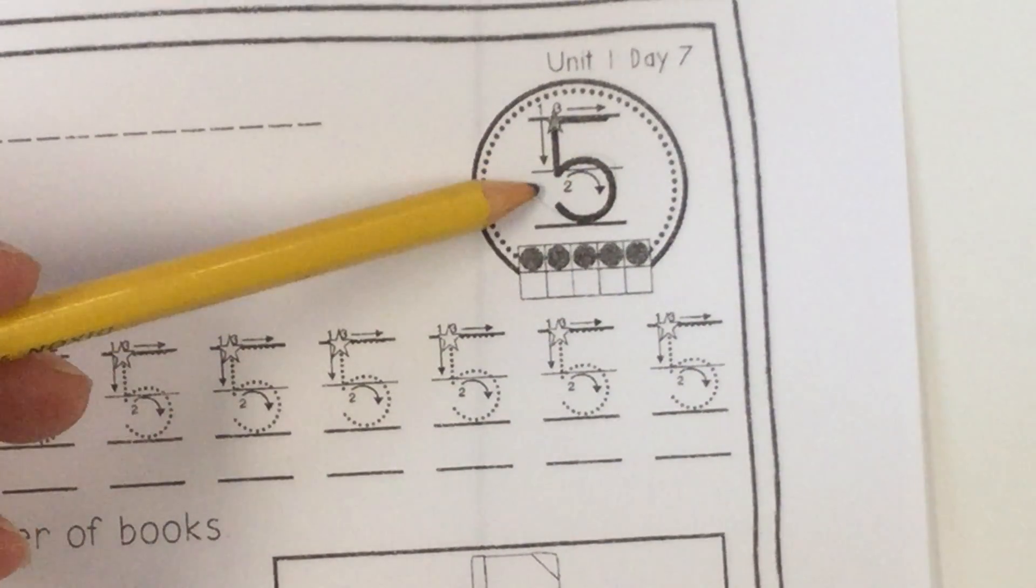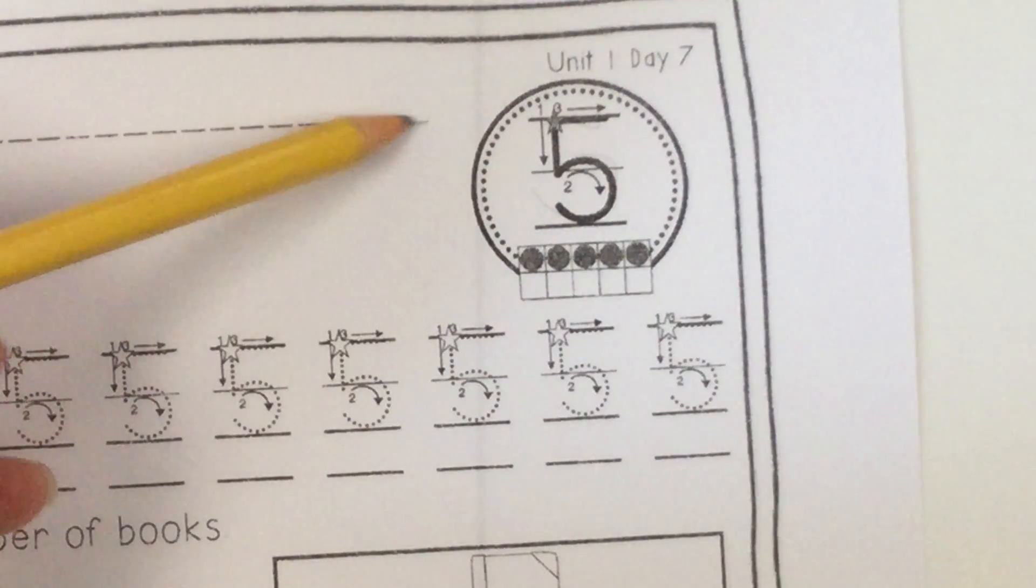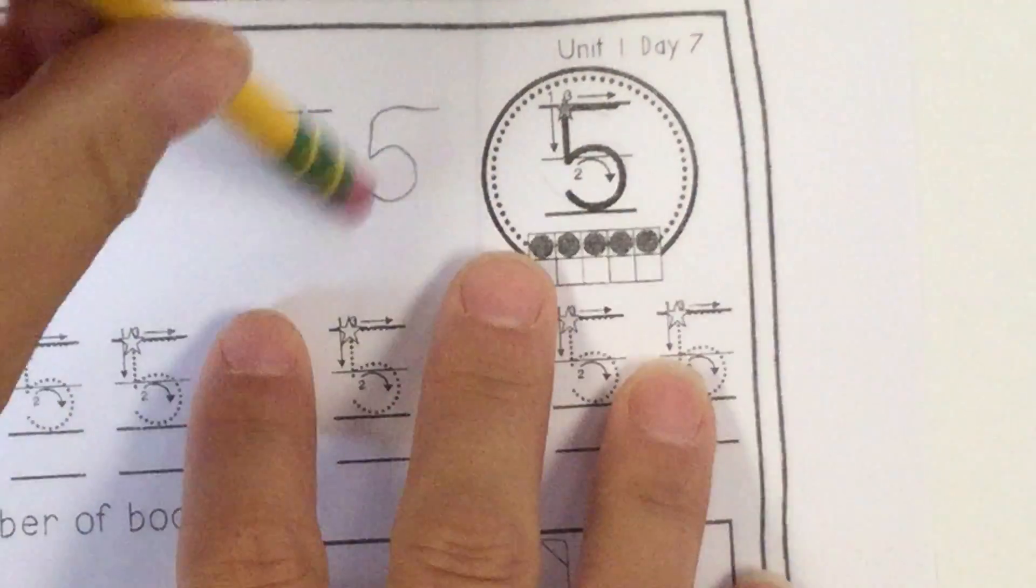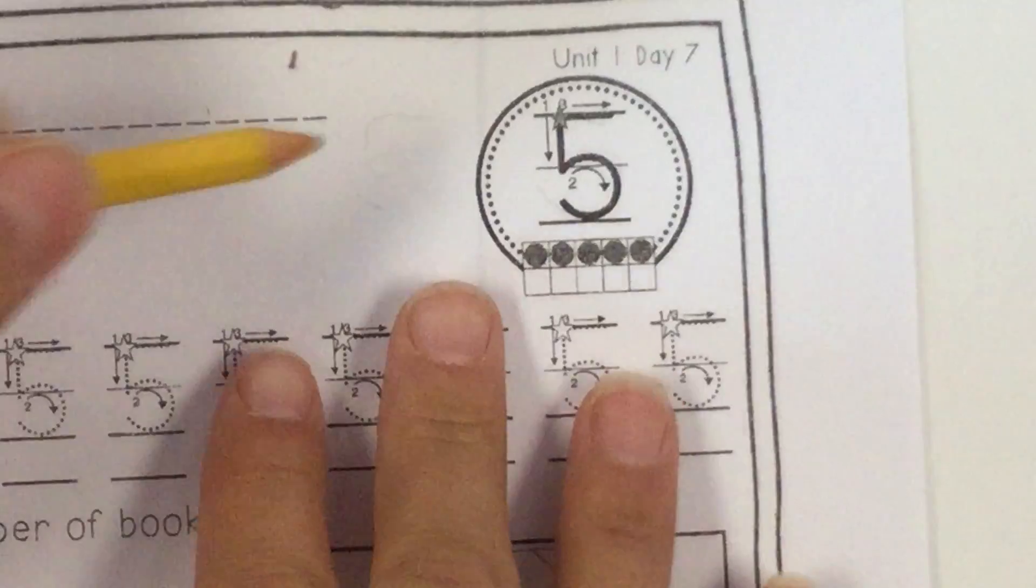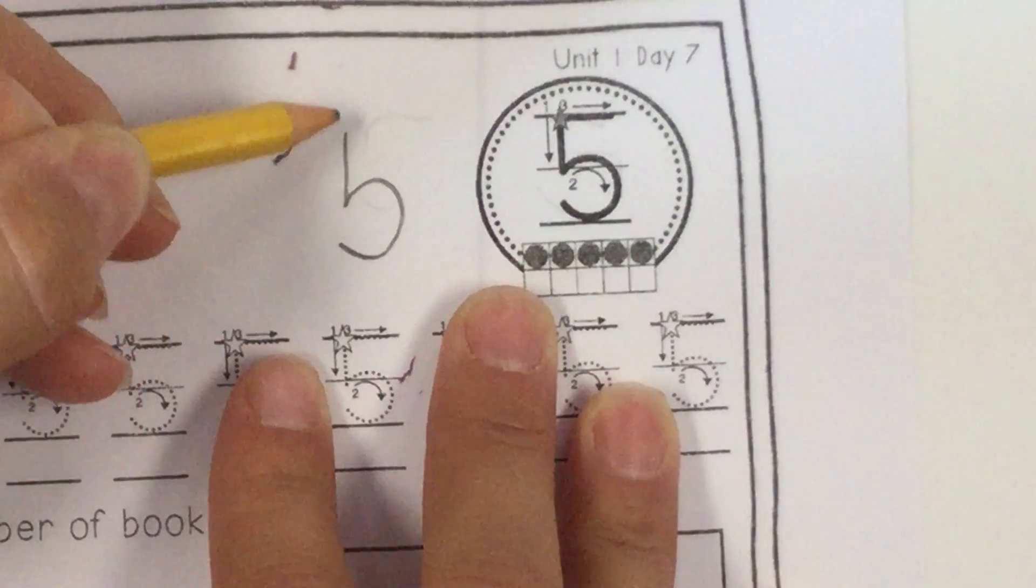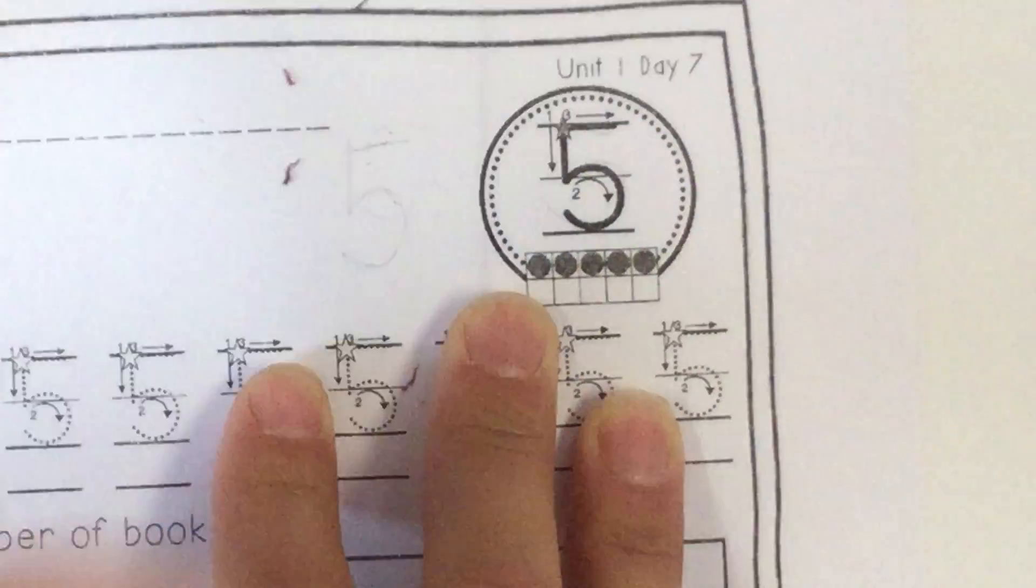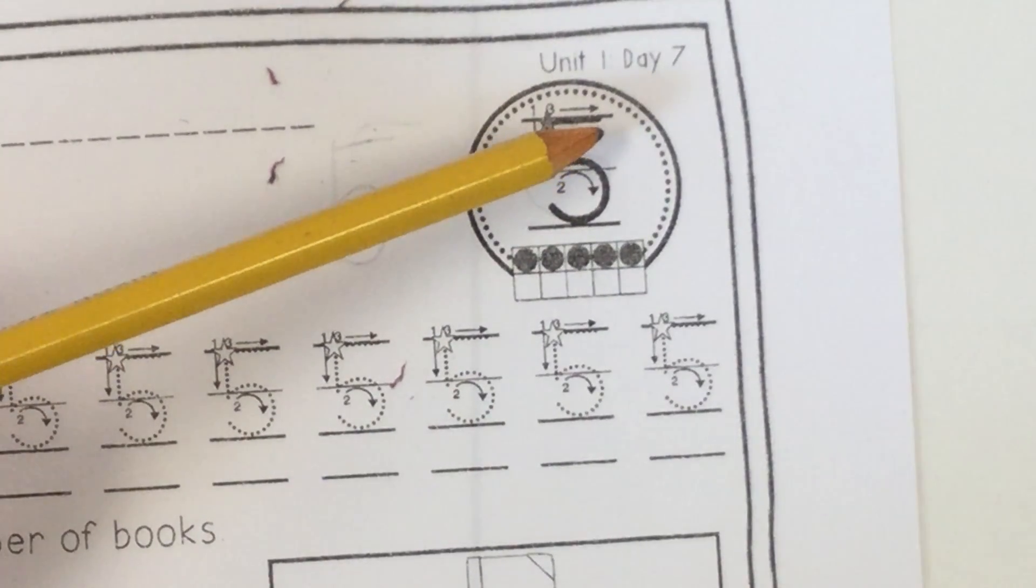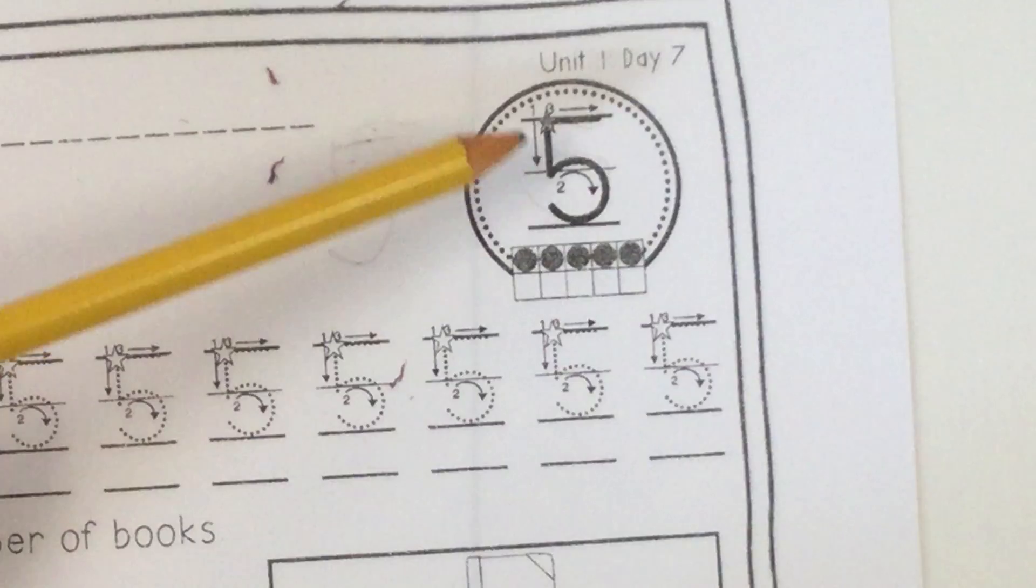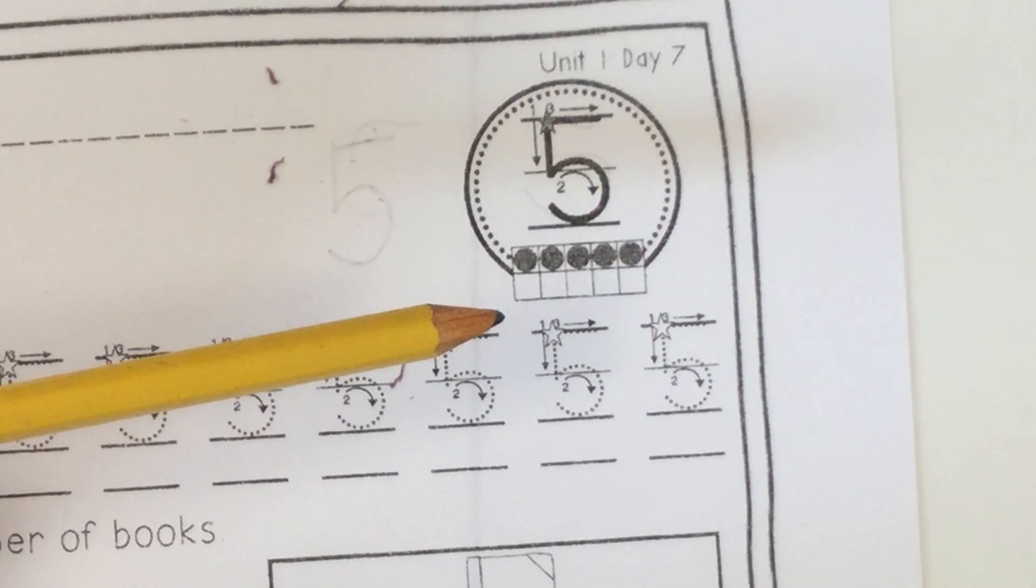Down and around and give it a hat. Okay. So make sure you do it like that and not like this. All right. Don't make your five like that because it's not one stroke. It's two. You come down, around, and then give it a hat. Okay. Much better. All right. So let's sing the song. Down and around and give it a hat. Down and around and give it a hat. Down and around and give it a hat. That's how we write number five.